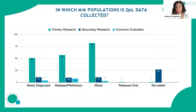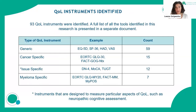In publications, quality of life data was collected mostly in primary research, with little contribution from economic evaluations. The population-level analysis showed distributions across different myeloma patient types, though this was at a more aggregate level than the registry analysis.